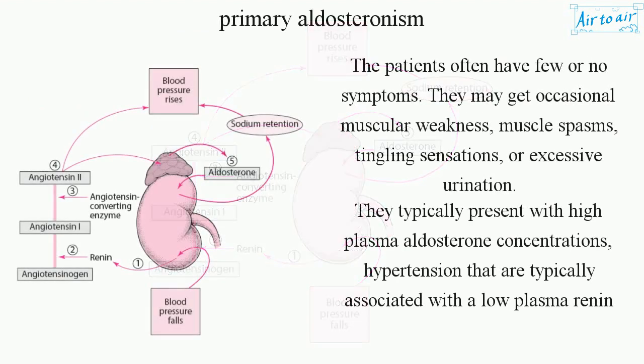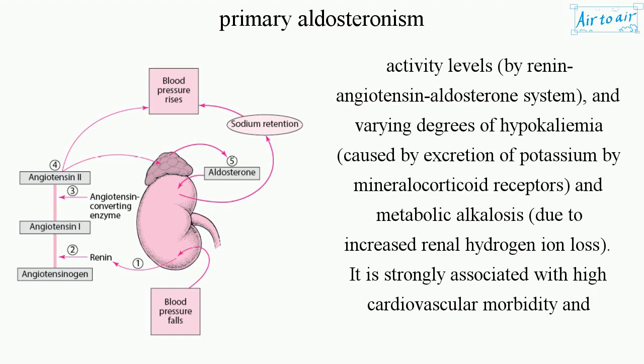Patients often have few or no symptoms. They may experience occasional muscular weakness, muscle spasms, tingling sensations, or excessive urination. They typically present with high plasma aldosterone concentrations and hypertension associated with low plasma renin activity.